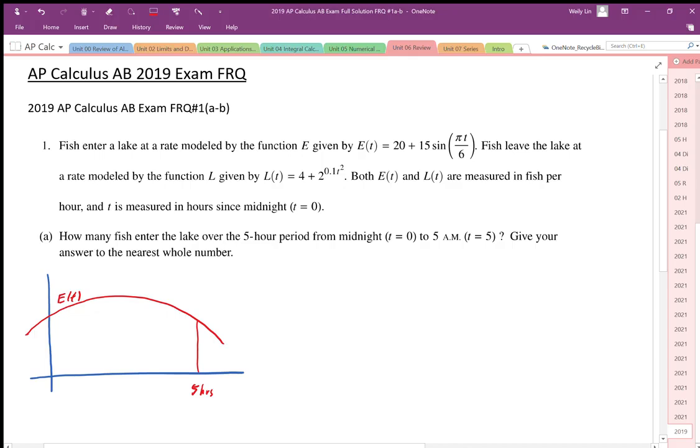And the fish leave the lake at a rate modeled by L, given by L of t equals 4 plus 2 to the power 0.1t squared. Both E of t and L of t are measured in fish per hour from the starting time of midnight, where t equals 0.